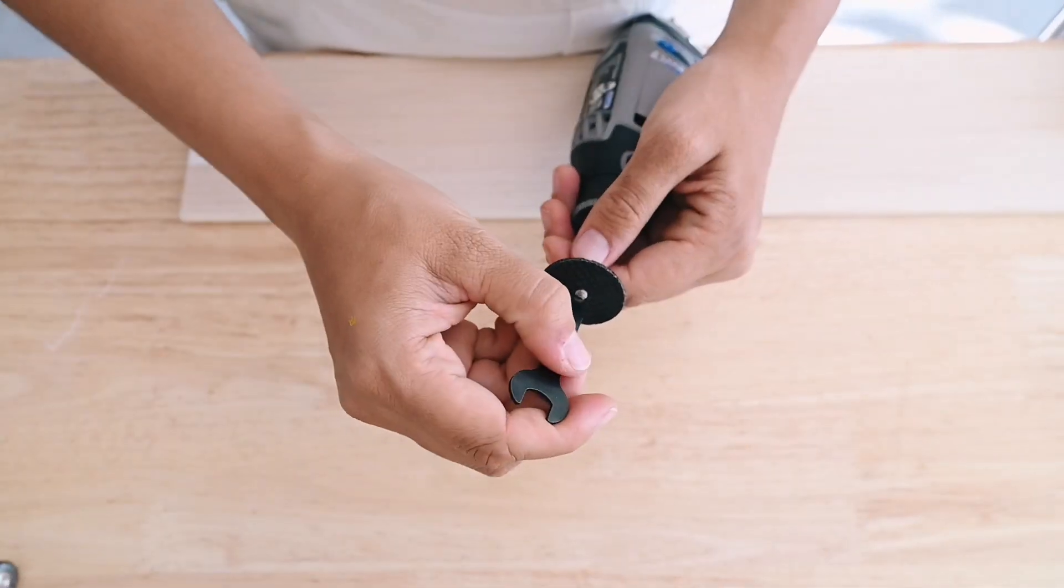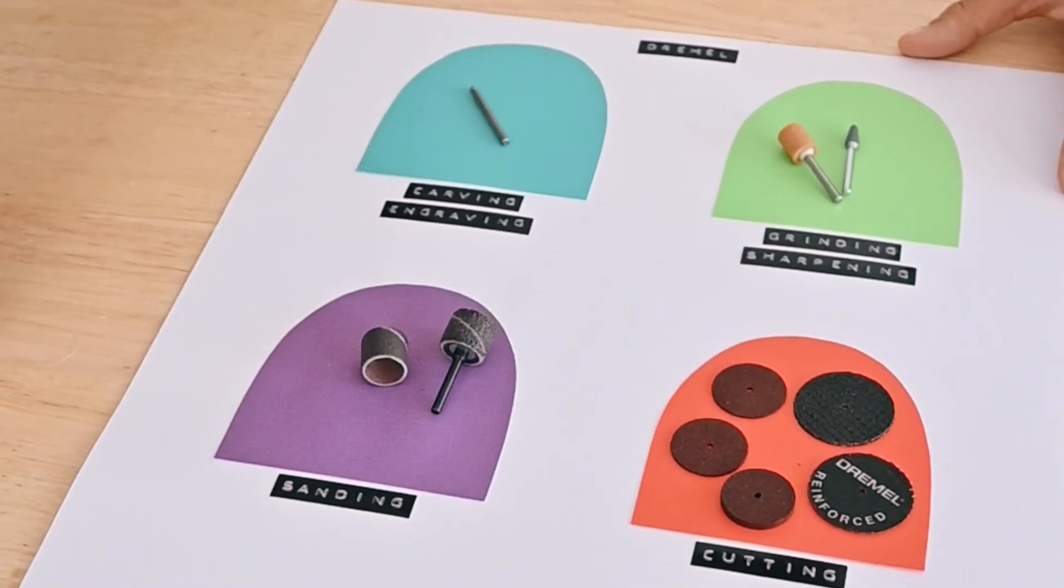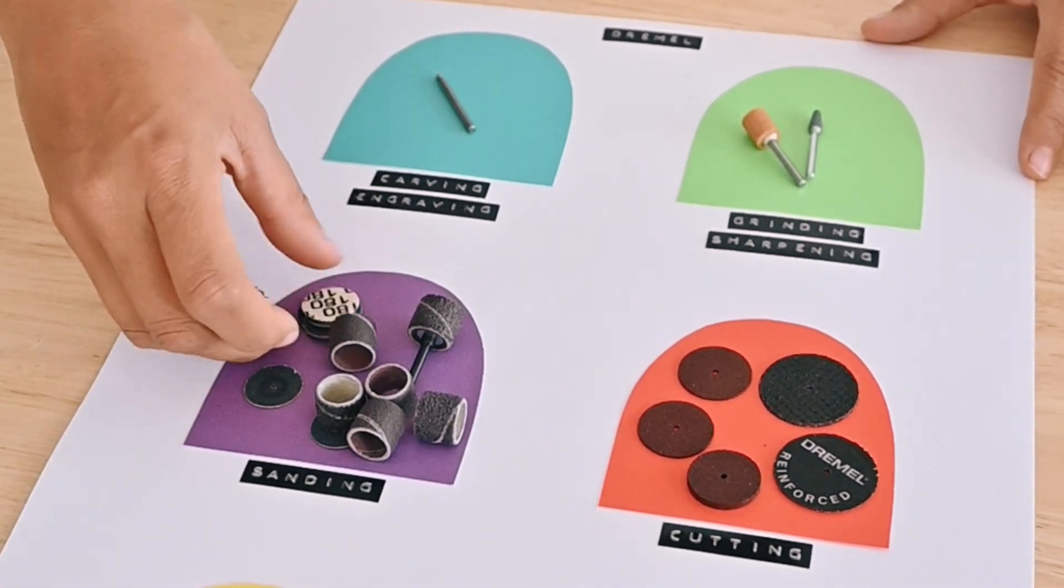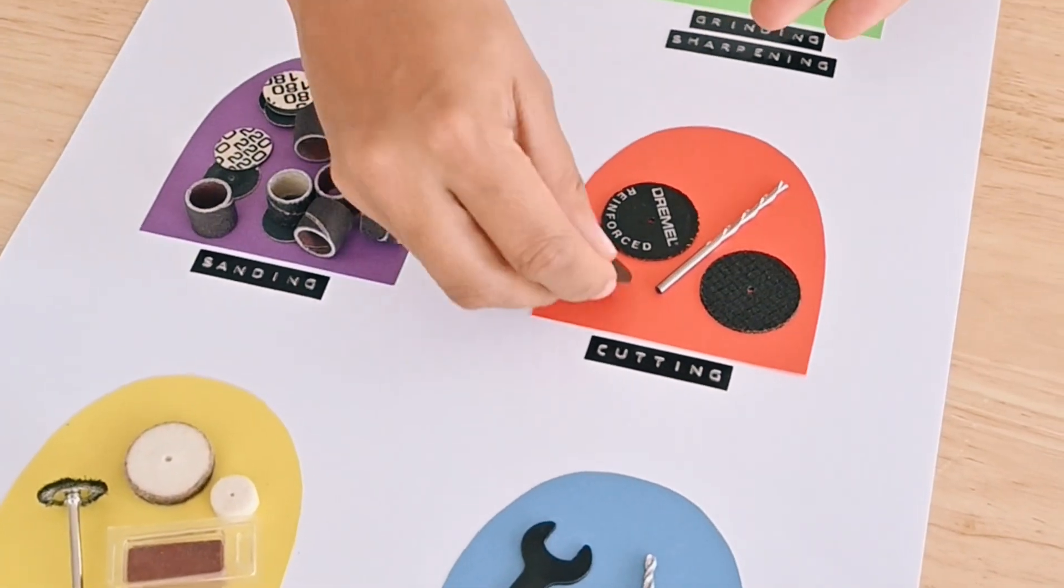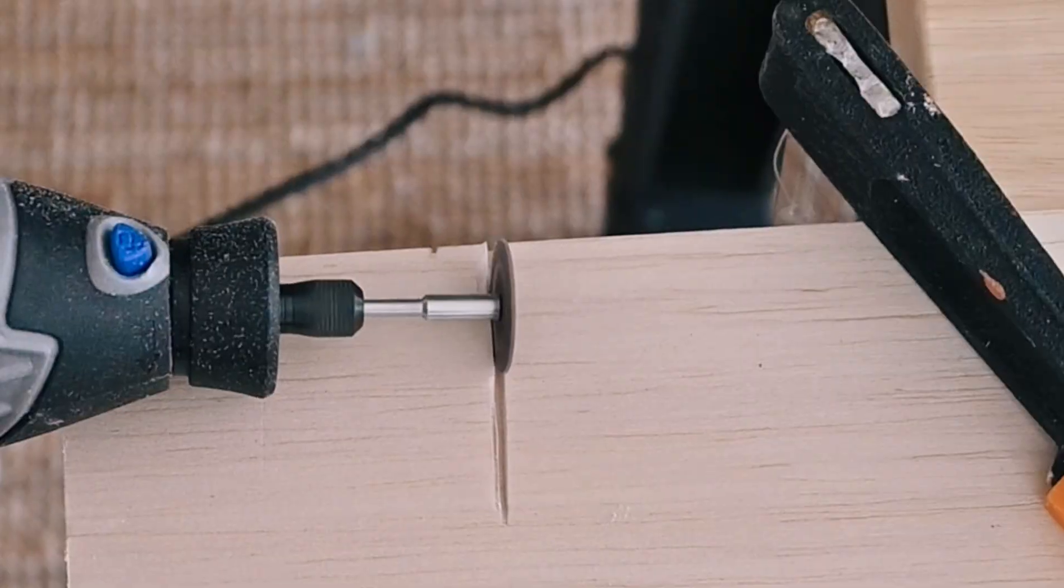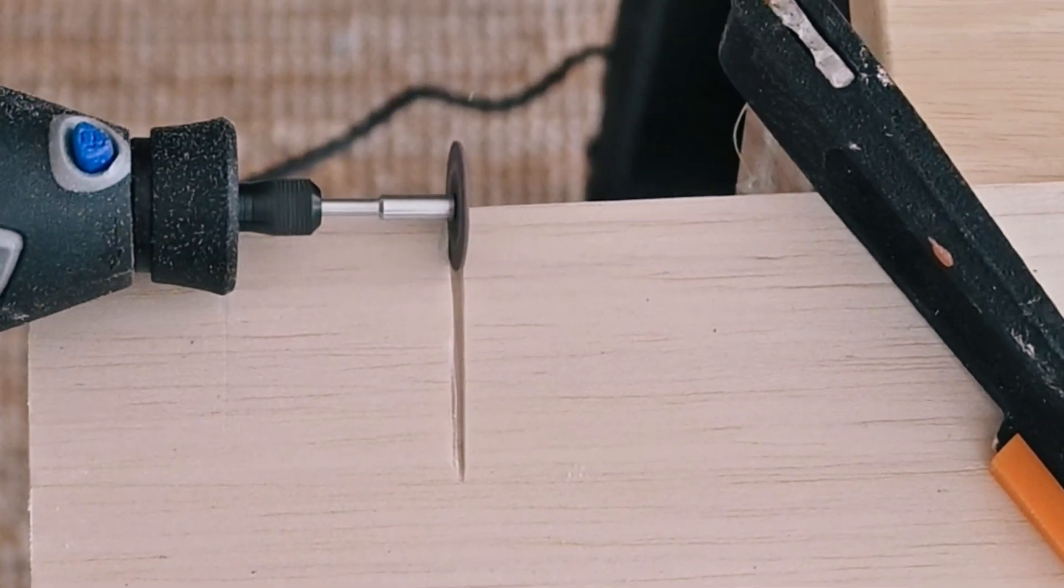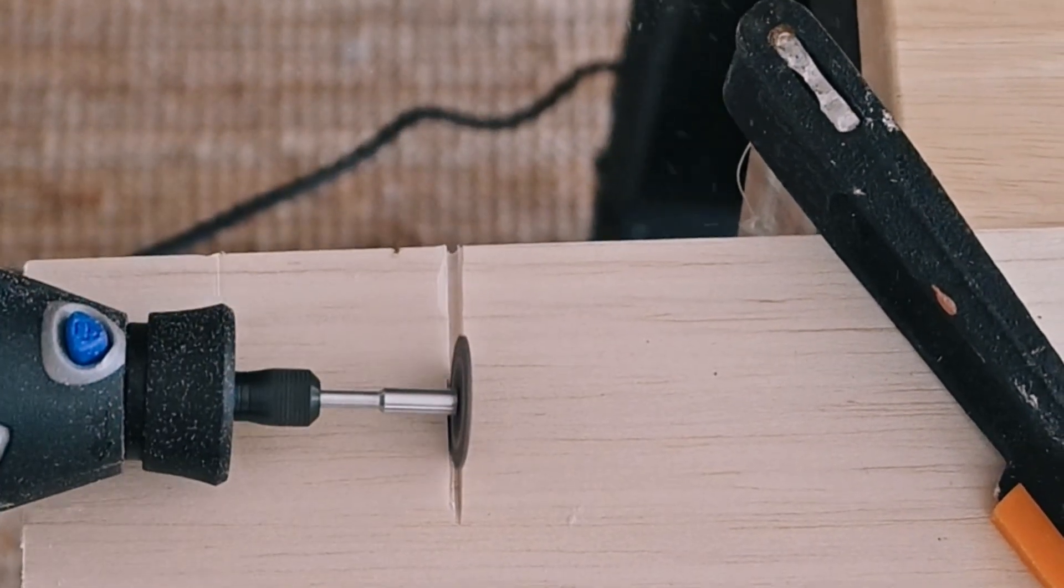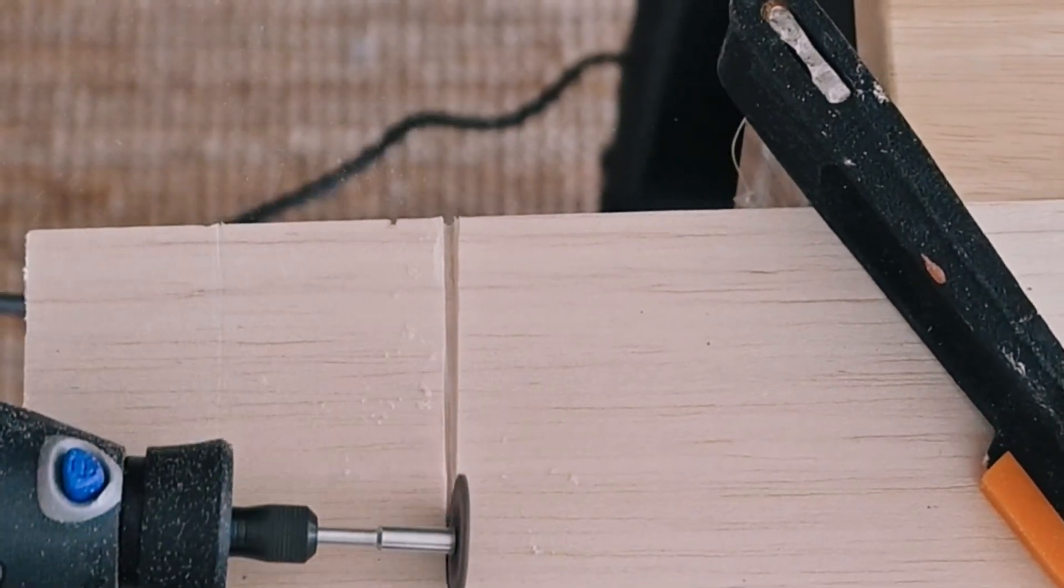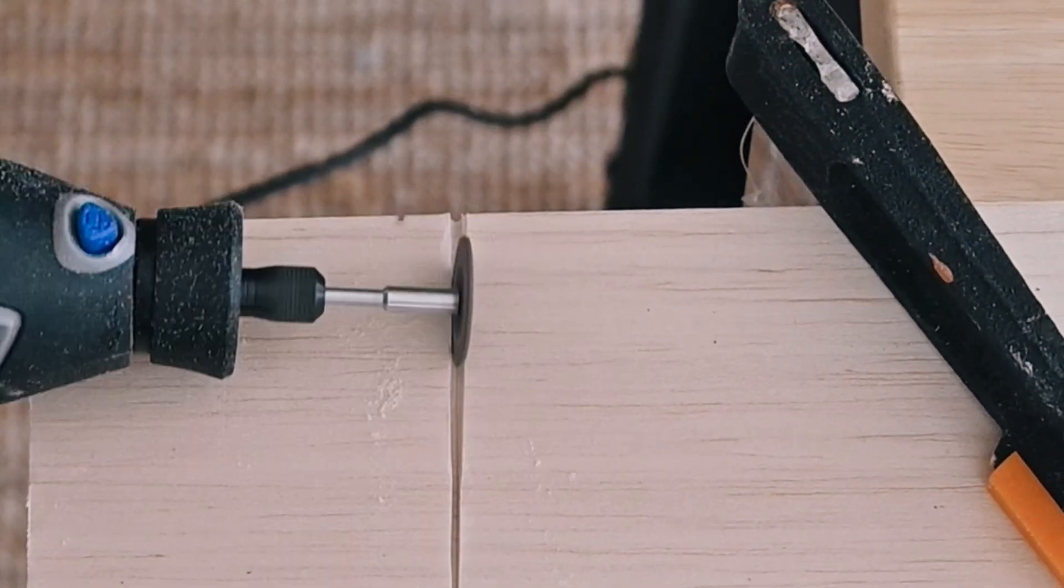The next step is to understand what different accessories do and the various types of projects that you can use them in. First up, cutting. There are various cutting wheels and also a spiral cutting bit that come as part of a standard Dremel kit. Depending on the RPM of your tool, you'll be able to do big and small cutting projects.